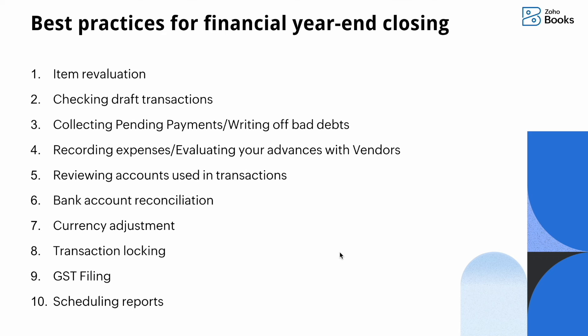The first task is item revaluation, then checking draft transactions, collecting pending payments and writing off bad debts. On the payable side, we will review recorded expenses, evaluate advances with vendors, and review accounts used in transactions. Then we cover bank account reconciliation, currency adjustment, transaction locking, GST filing, and finally scheduling reports to send to your accountant.